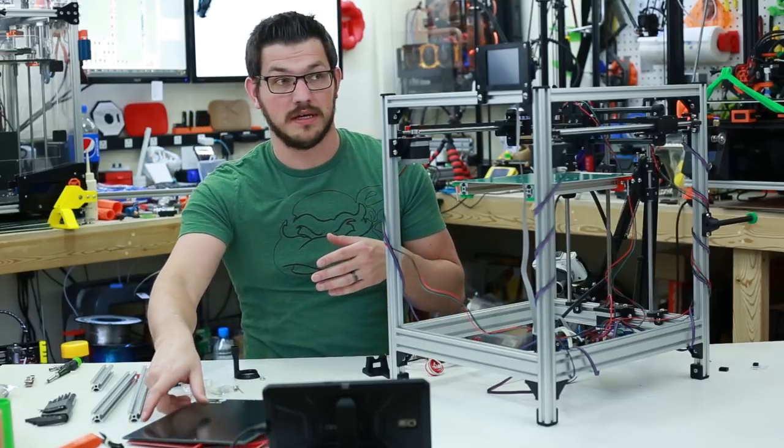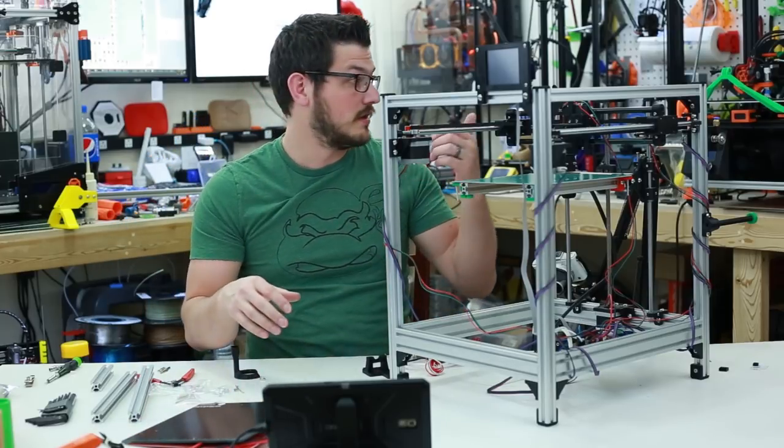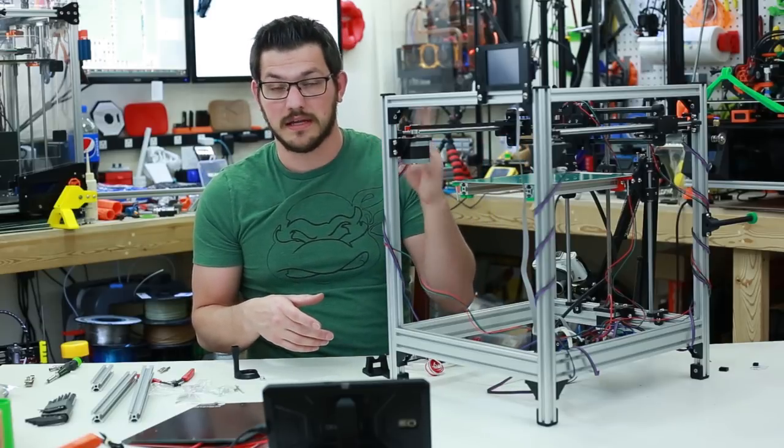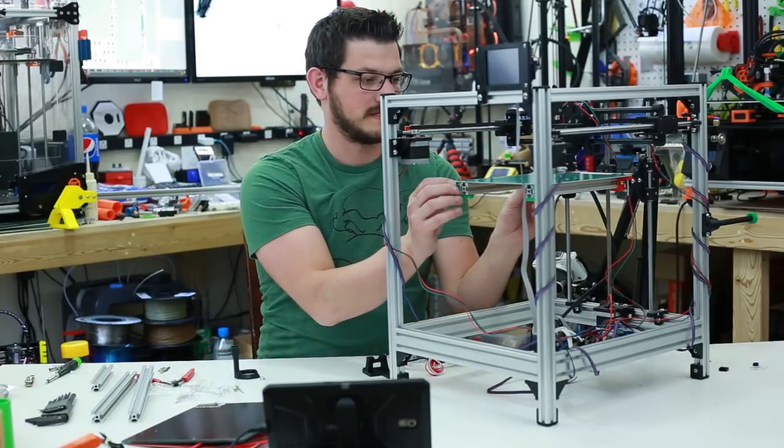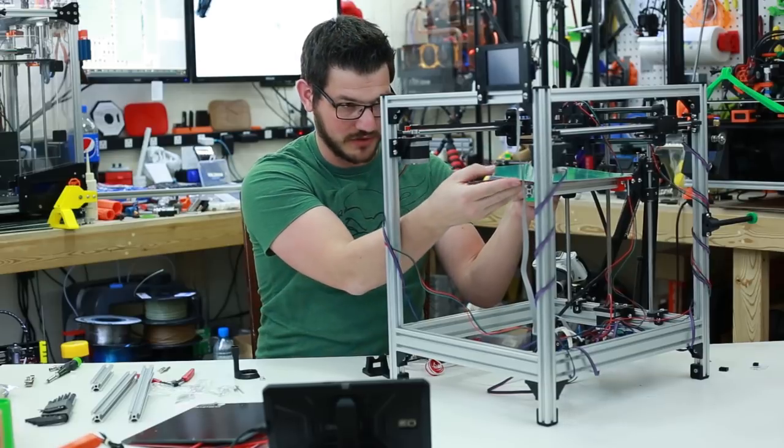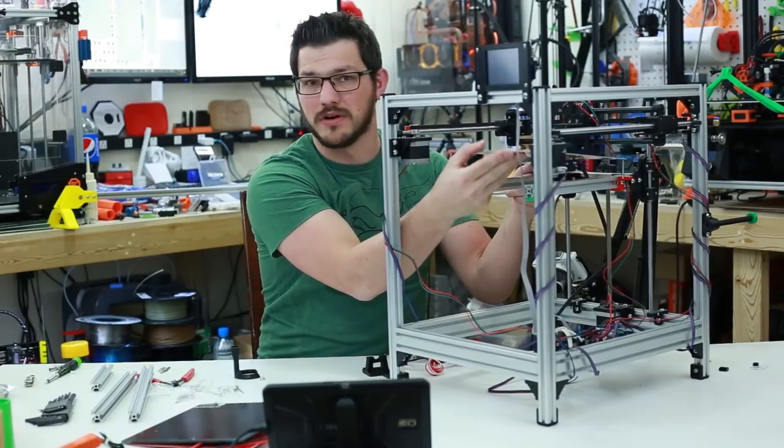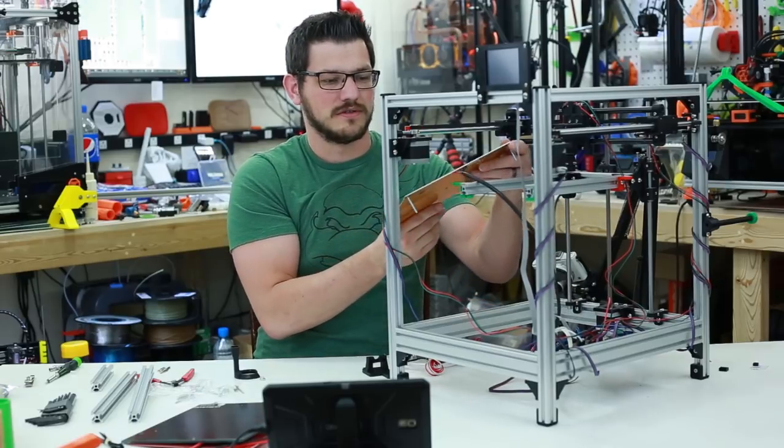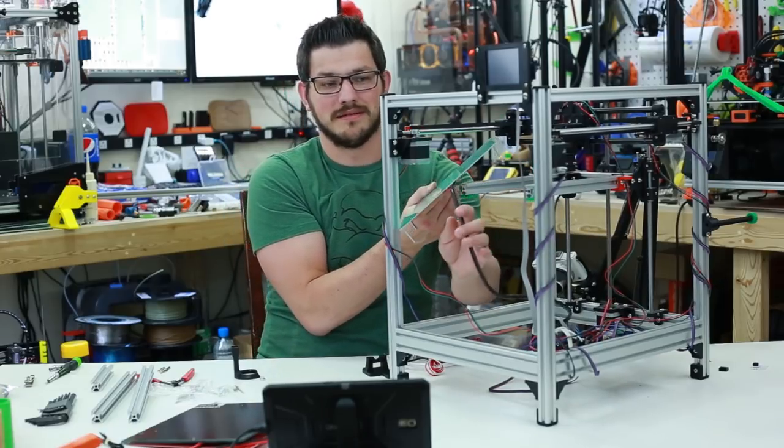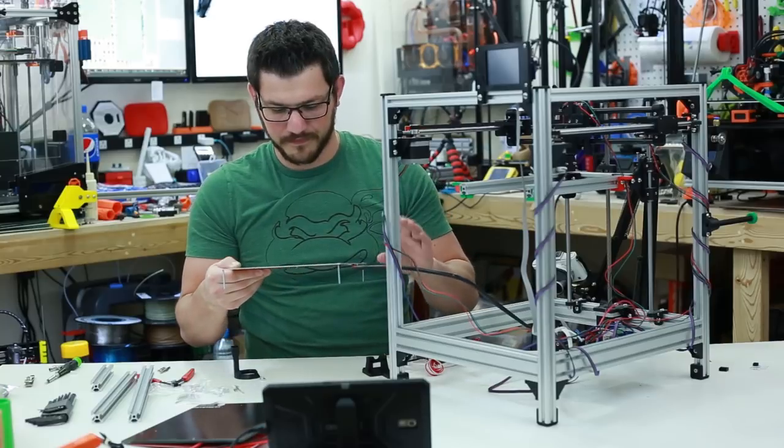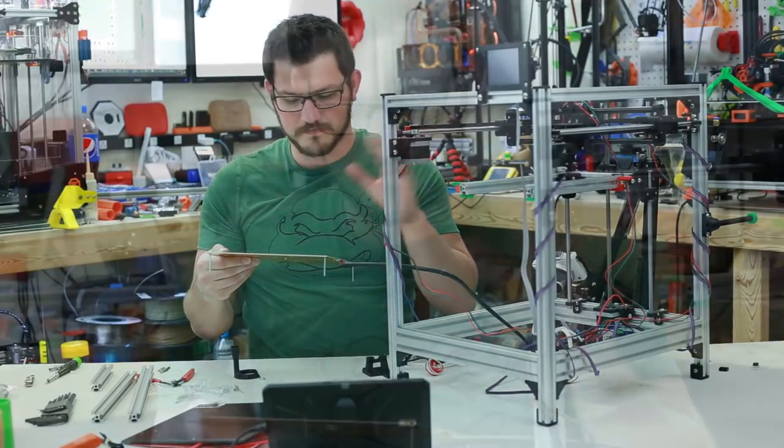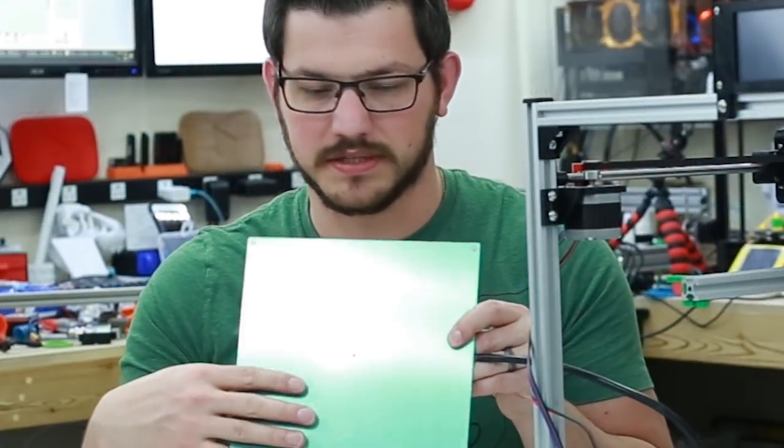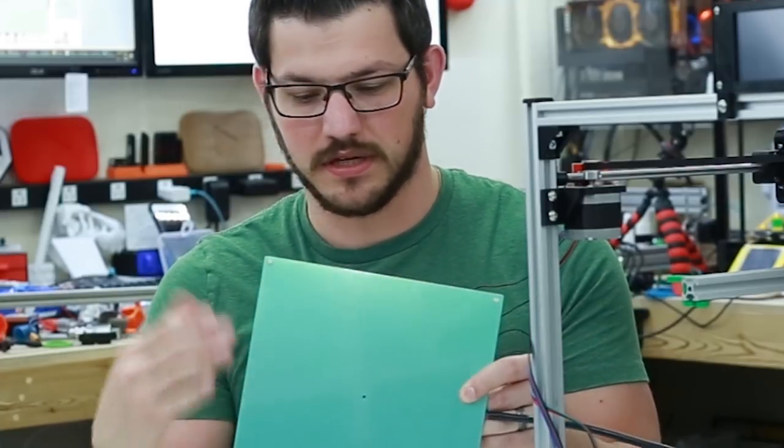I have it on the CR10 right now, and it obviously comes on the AnyCubic i3 Mega. But this kit you can buy, I think this was either $20 or $25. You can get it on Amazon if you want to get Prime, AliExpress is maybe like a dollar cheaper. So it's fine just getting it from Amazon and not waiting a month to get it.